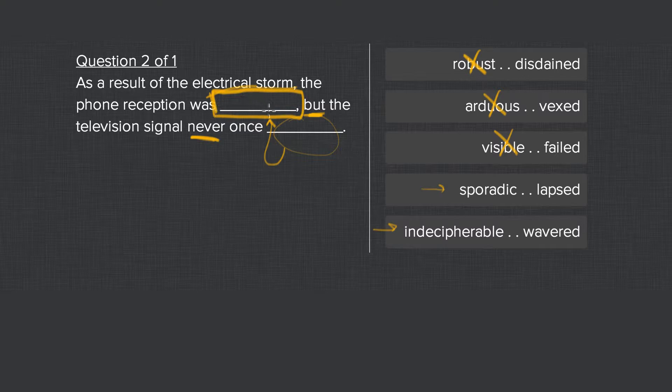Because it says never, that's almost like a double negative. We're saying the phone reception was sporadic and indecipherable, those are both words which indicate that it was not working. So you say the phone reception was not working but the television signal never once, and then you want a word that also means not working.